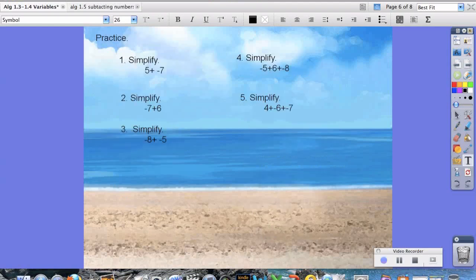So let's try a couple of quick practice problems. Number 1 says 5 plus negative 7. So these signs are not the same. So we're going to find their difference. 7 minus 5 equals 2. And because 7 is a larger number, we're going to keep that sign, and 7 is negative. So the answer will be negative 2.